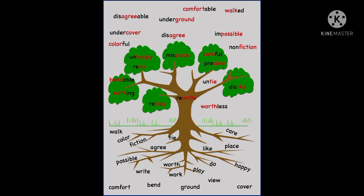Now look at the branches and above the branches — prefixes and suffixes are given. Let's see the prefixes first: impossible, nonfiction, dislike, preview. Okay children, these are some of the examples for prefixes.